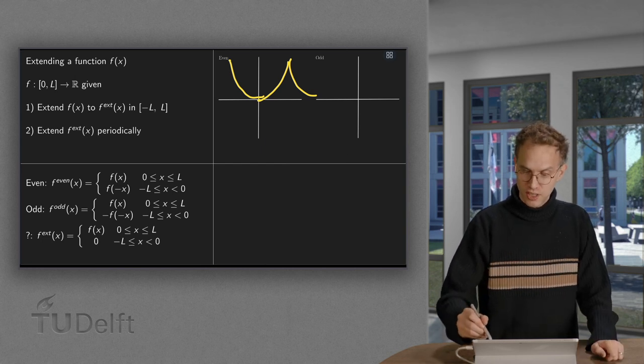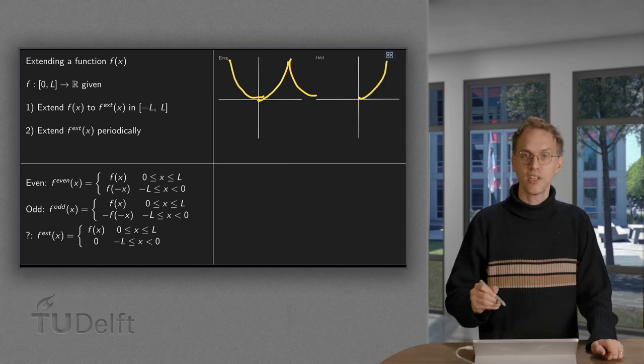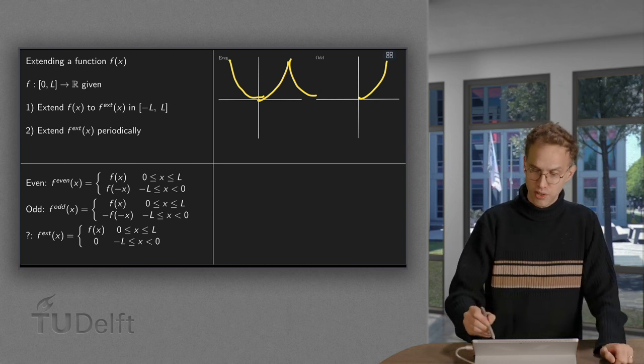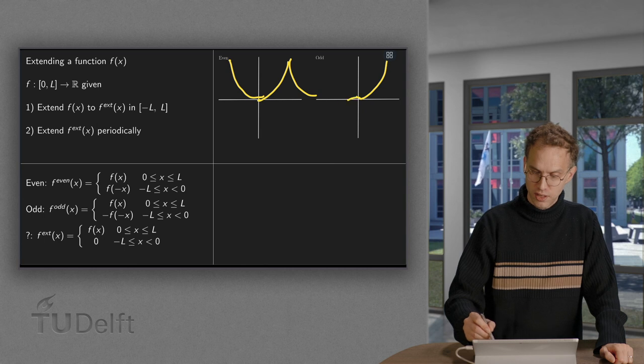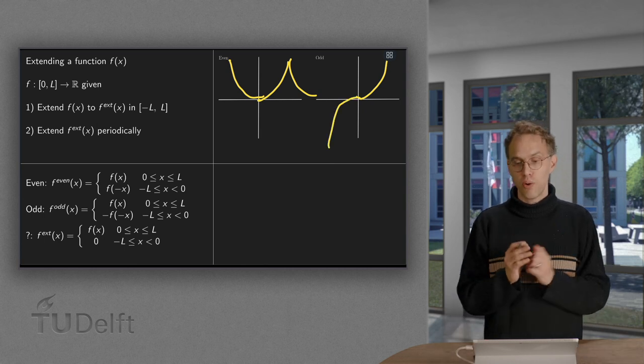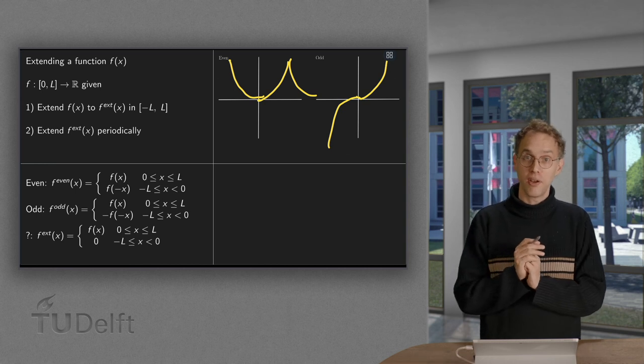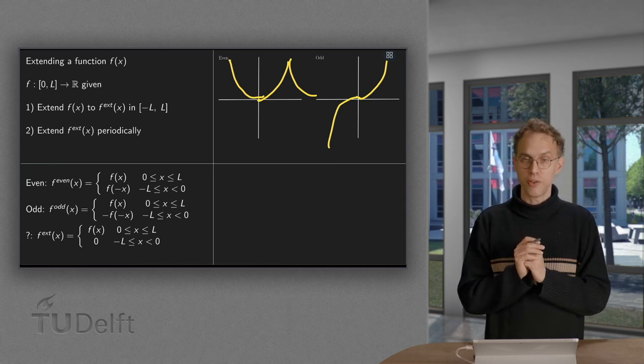And what about the odd extension? Again we have our function between 0 and L, something like this again. How do we make the odd extension? Now then we turn this into an odd function, like this. There we have our odd extension, and then, of course, continue periodically. So there we have our odd extension.